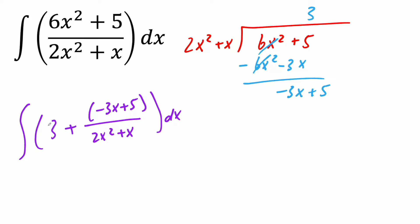At this point we're going to split it up. The integral of 3 will give us 3x. And this piece I'm actually going to rewrite it. So I'm going to say plus the integral, negative 3x plus 5, divided by,